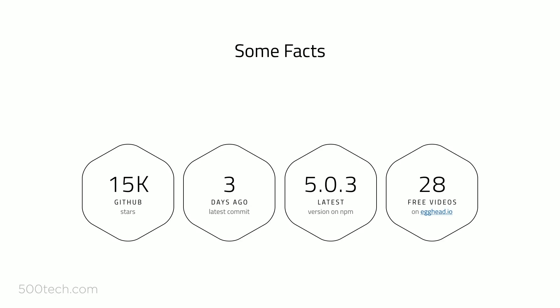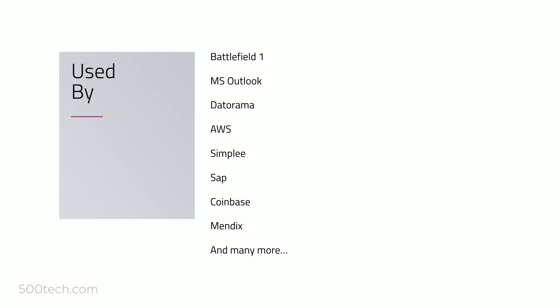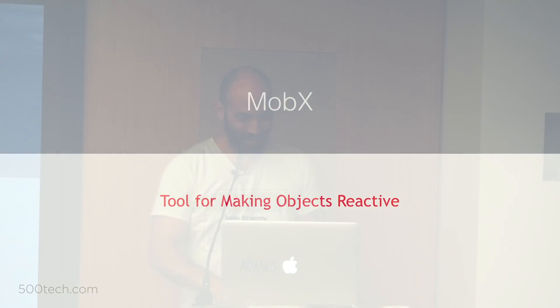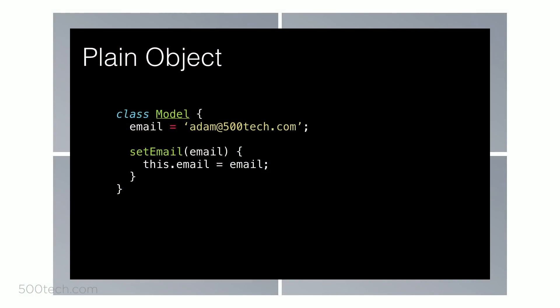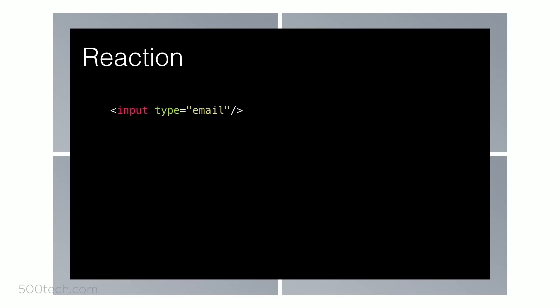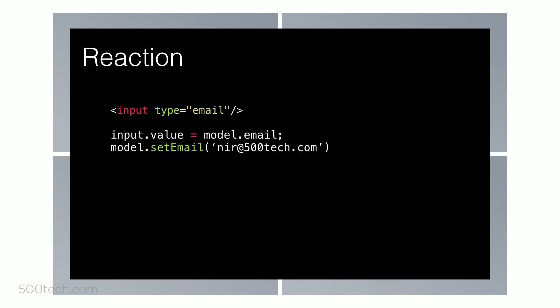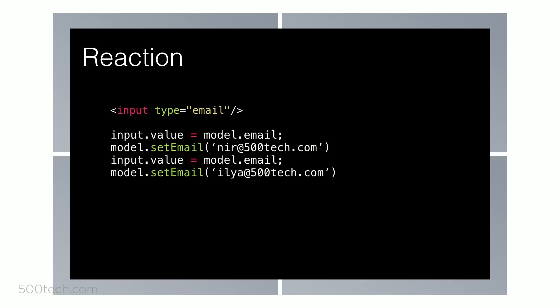Some facts about MobX: it's very popular, a lot of companies use it, it has a lot of teaching material on the internet, and it's used by many large-scale applications. So what is MobX? It's a tool for making objects reactive. Take a plain object — a class with an email property and a function to mutate the email. Reactive means that if the model changes, we want to do something, like update an input. Without MobX you have to manually update the input every time the model changes. This is not reactive — it's manual.